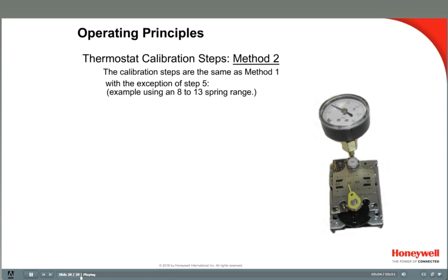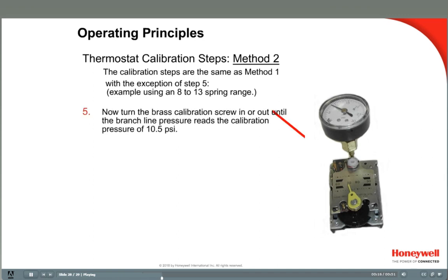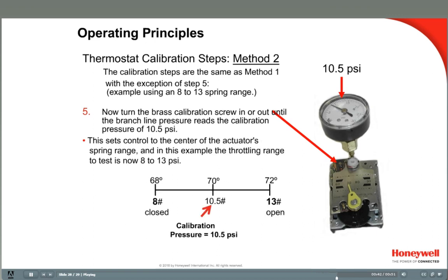The alternate method of calibrating the thermostat — Method 2 — is to calibrate it to the center of the actuator's spring range. In this example, the spring range is 8 to 13 pounds, as indicated on the actuator's product tag. The calibration steps are the same with the exception of the step where we set the calibration screw to the pressure at the middle of the throttling range. Instead, adjust the calibration screw to the pressure midway through the actuator spring range — set the screw until the gauge reads 10.5 pounds, because that's halfway between 8 and 13 pounds. Then verify that the valve or actuator is closed at 8 pounds and open at 13 pounds, as this is the spring range of the actuator.